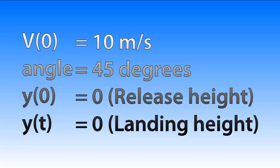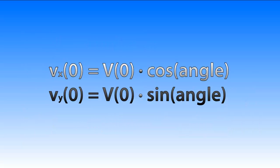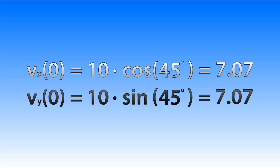So our vx0 component, the velocity in x-direction is 7.07. The one in y is the same because it's a 45 degree angle, but it is a different equation as you can see.